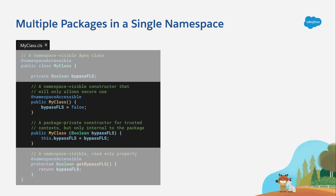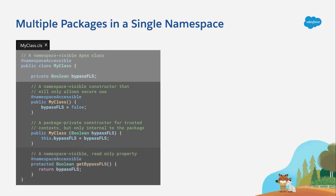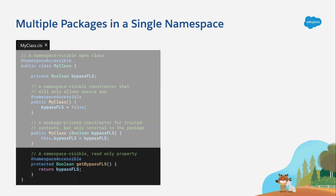The other constructor — the one that's not marked as @namespaceAccessible — is essentially package-private, because it's only public to the other code within the package that it lives in. I can also mark properties as being @namespaceAccessible. In fact, classes, methods, properties, interfaces, and even abstract classes all support the @namespaceAccessible annotation.